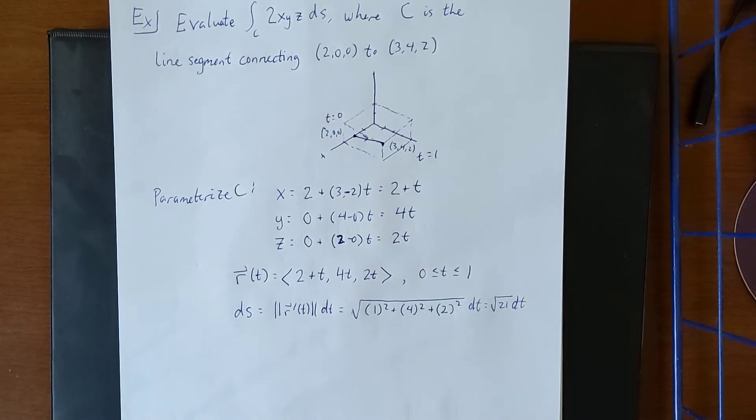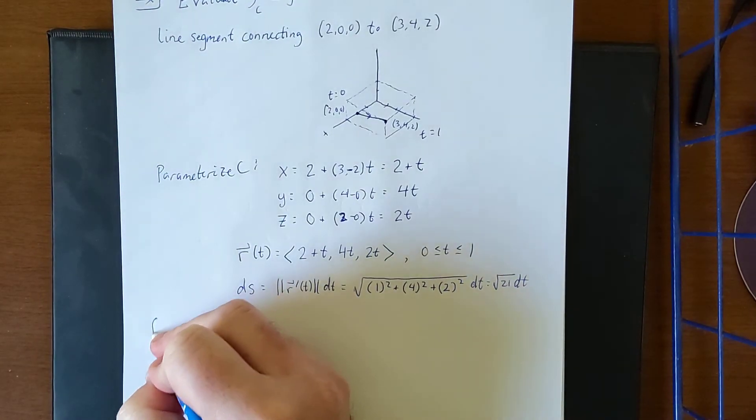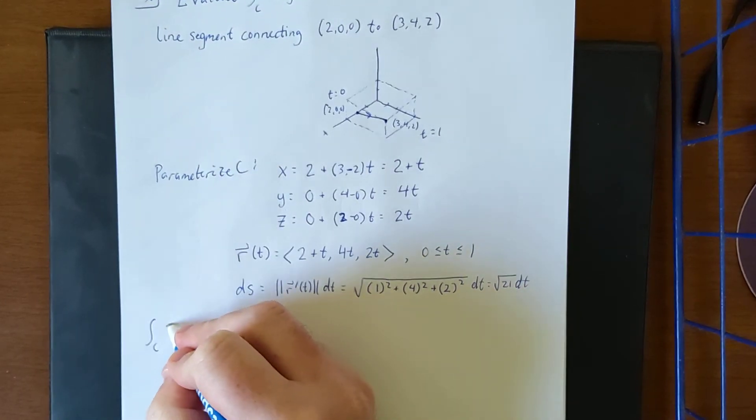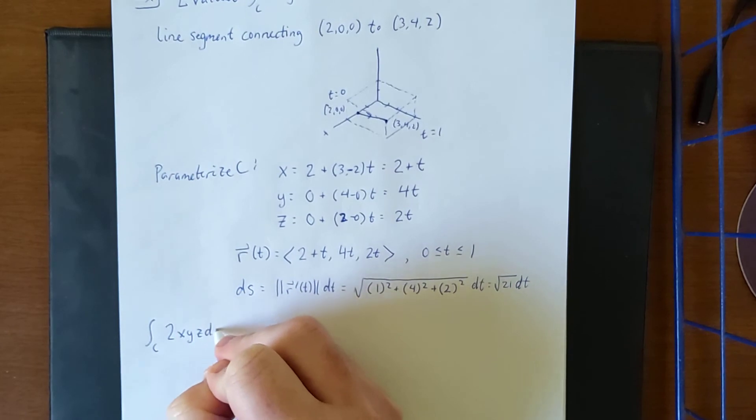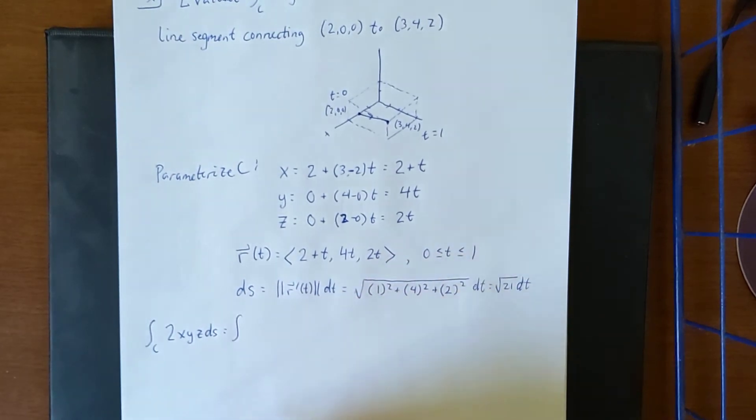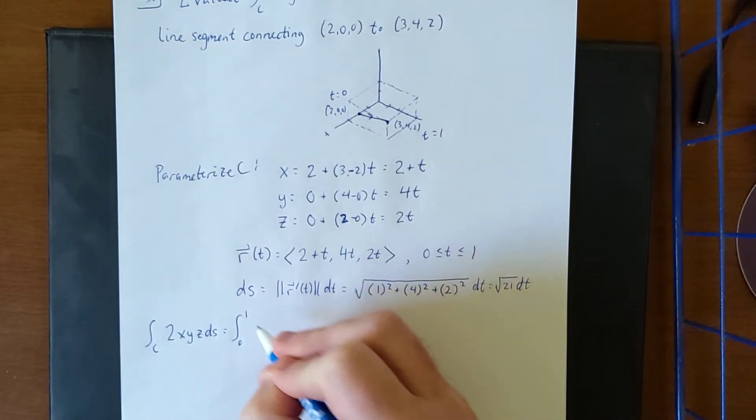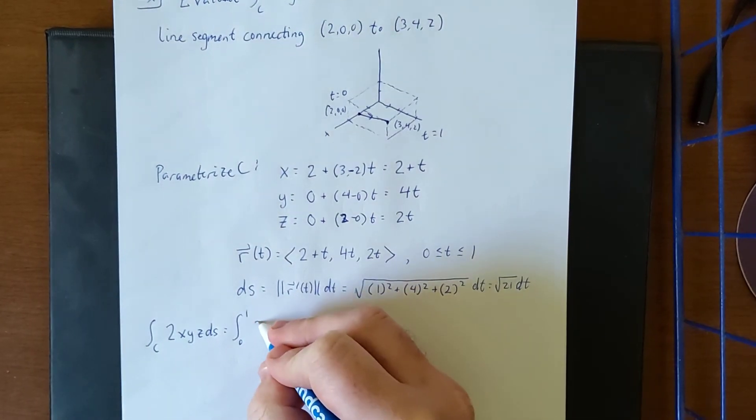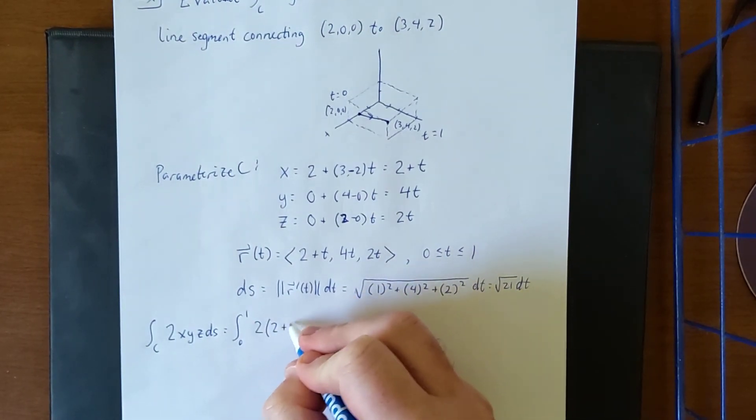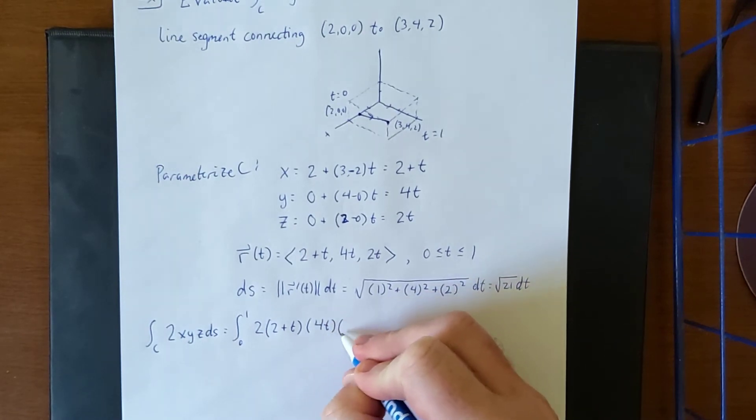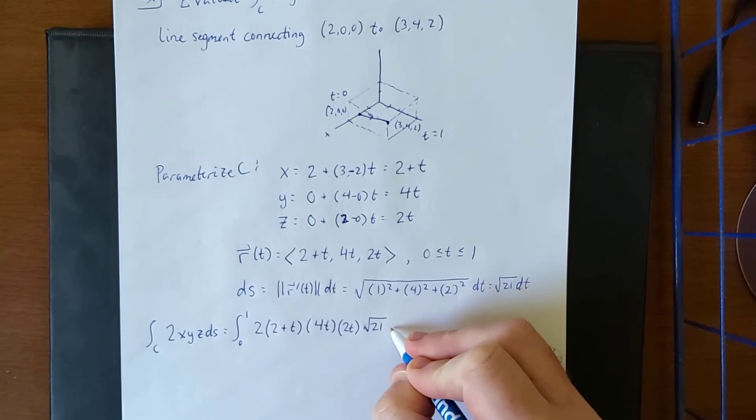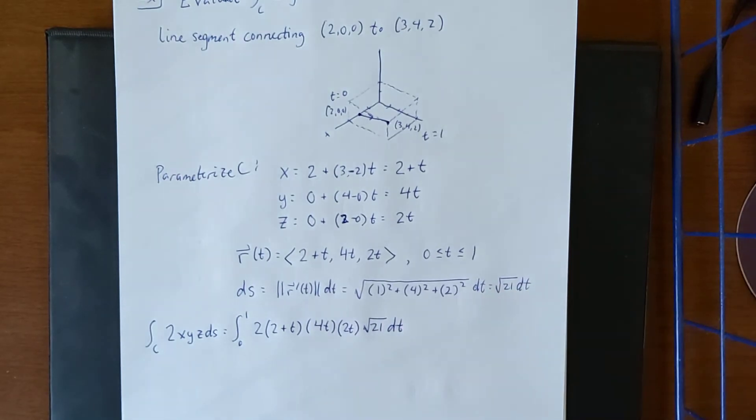So we are now ready to parameterize our line integral. The line integral over C of 2xyz ds becomes the definite integral from 0 to 1 of 2 times x (that's 2+t) times y (that's 4t) times z (that's 2t) times ds (that's √21 dt).